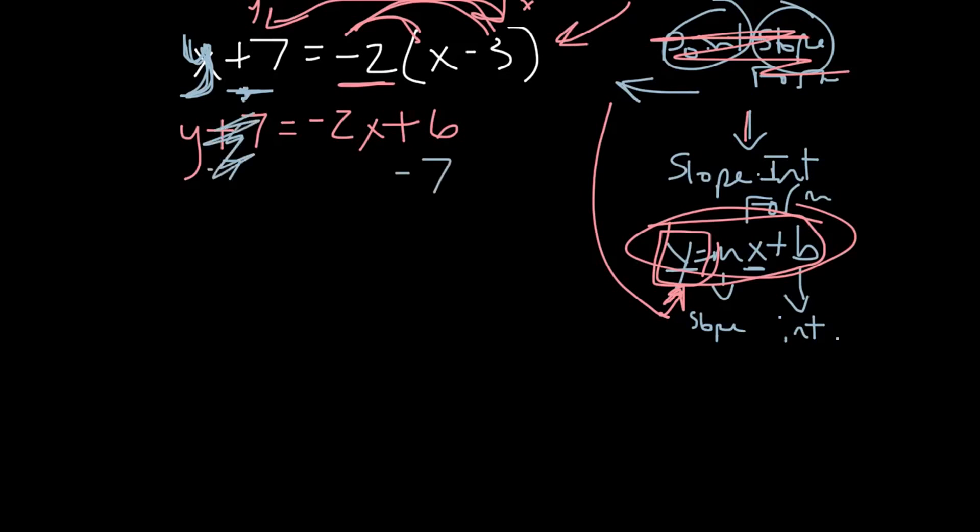Now if we are multiplying across the side or dividing, we'd have to divide each of these monomials, this one and this one, by that number. Now since it's just adding and subtracting, we can just take it off of the chunk of it, which means we're just going to subtract from that six. So let's bring everything down, y equals negative 2x, and then six minus seven is negative one.